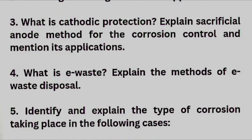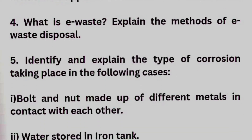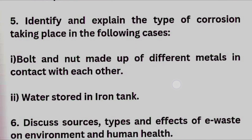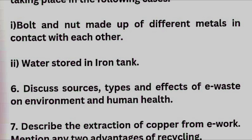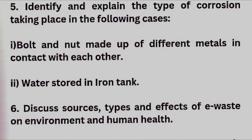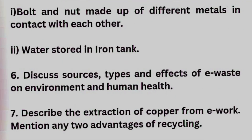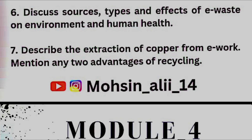Next: what is e-waste? Explain the methods of e-waste disposal. Identify and explain the type of corrosion taking place in the following cases: a bolt and nut made up of different metals in contact with each other, and water stored in an iron tank. You have to explain what type of corrosion is taking place in these two cases. Next: discuss the sources, types, and effects of e-waste on environment and human health. And last: describe the extraction of copper from e-waste and mention any two advantages of recycling. These are the seven questions from Module 3.